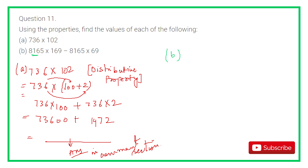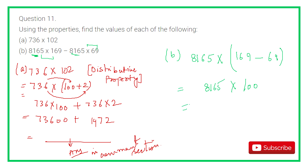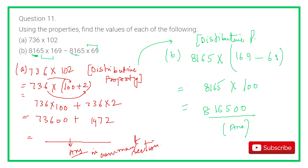For part B: we notice a common term — 8165. We take 8165 as common and get 8165 into (169 minus 69), which is 8165 into 100, giving the answer 816,500. Distributive property is used here again.